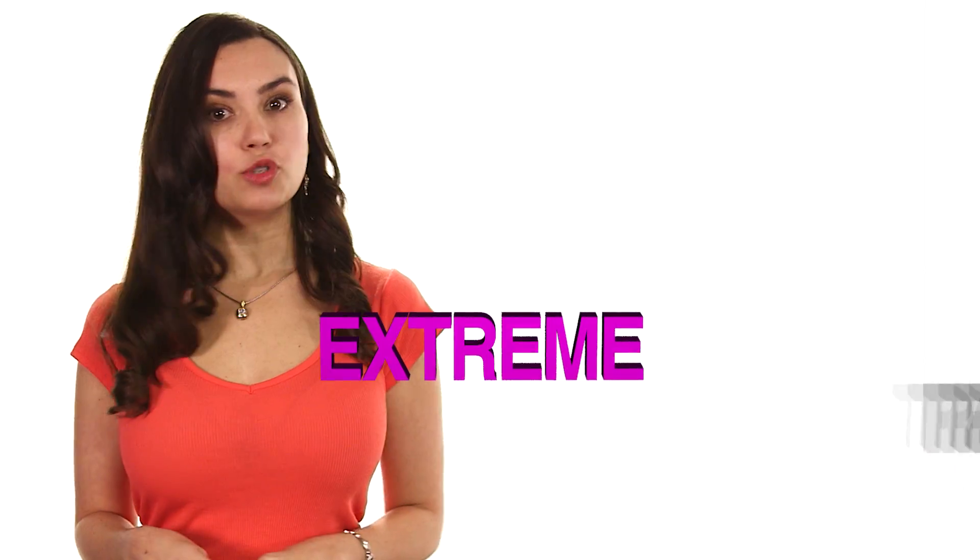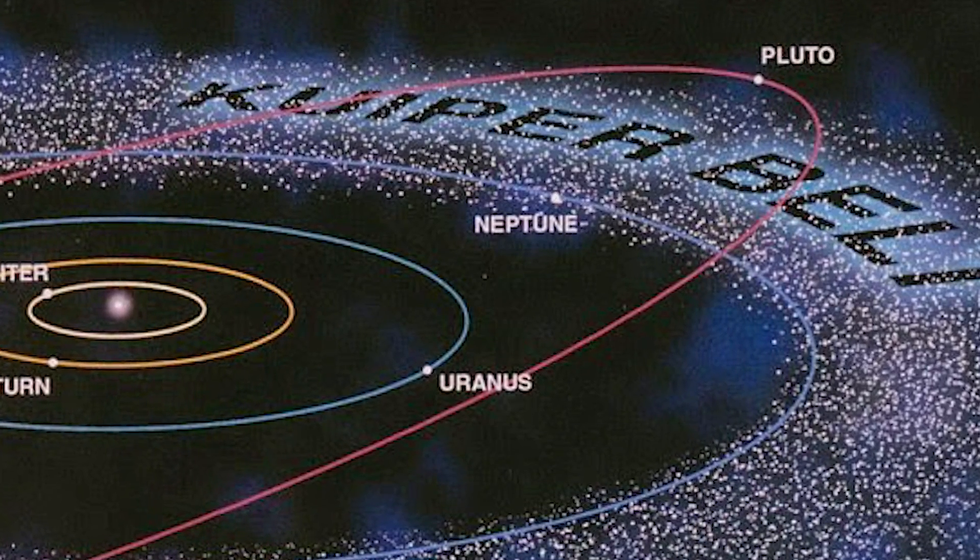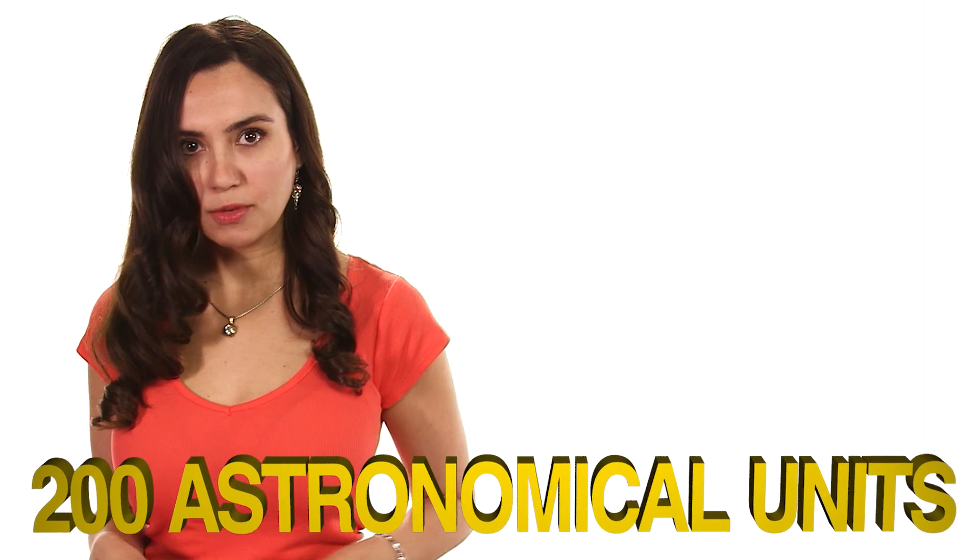Scientists have been looking into ETNOs, or Extreme Trans-Neptunian Objects. Which means really, really far past Neptune. A TNO means just regular past Neptune, like Pluto. But an ETNO, like their orbital path is around 200 astronomical units from the Sun. Earth is only one astronomical unit to give you an idea of just how far that is.